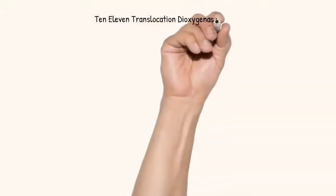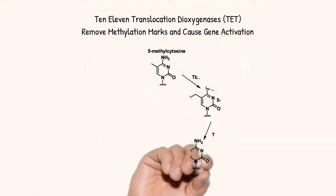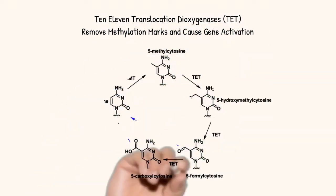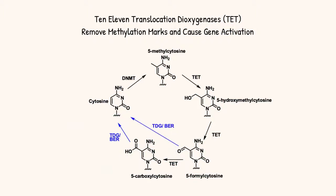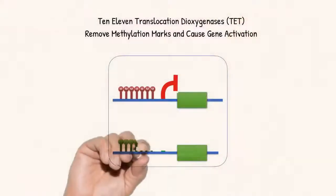It was found that ten-eleven translocation dioxygenases play a very important role in oxidizing the methyl group within DNA to hydroxymethyl-C, formyl-C, and carboxyl-C. These oxidized forms are then recognized as DNA damage and are removed by the DNA repair machinery, enabling genes to be activated by removing a repressive mark.